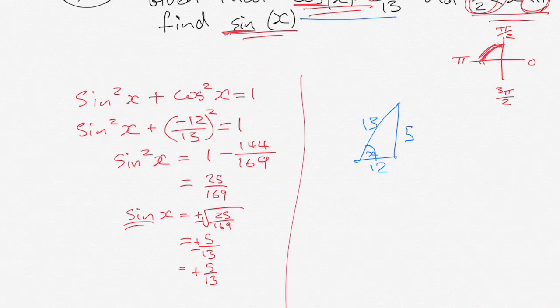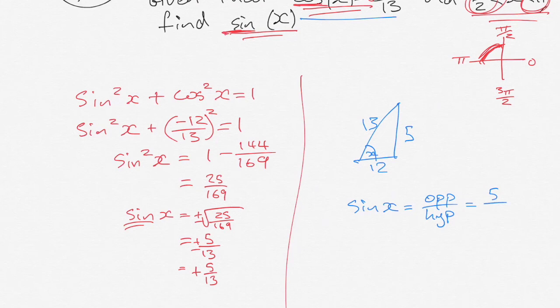So if I know that that value has to be 5 then sin x is going to be equal to opposite over hypotenuse which is equal to 5 over 12. And then we just need to consider that we're in quadrant 2 and so in quadrant 2, sin is positive and thus sin x equals 5 over 12.